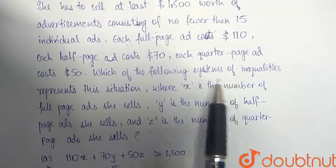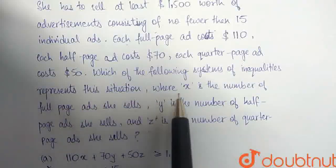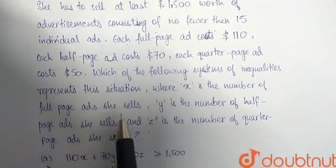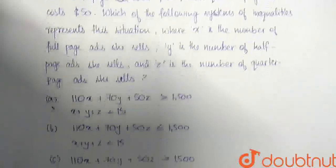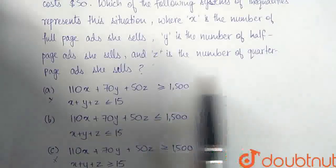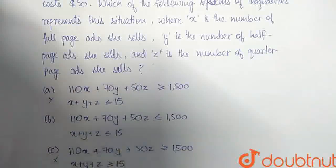Which of the following systems of inequalities represents this situation, where x is the number of full-page ads she sells, y is the number of half-page ads she sells, and z is the number of quarter-page ads she sells?